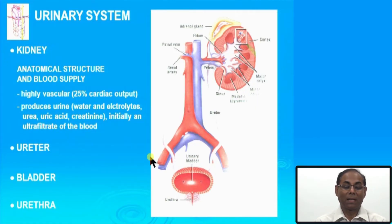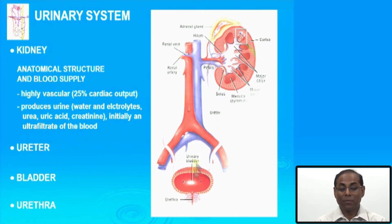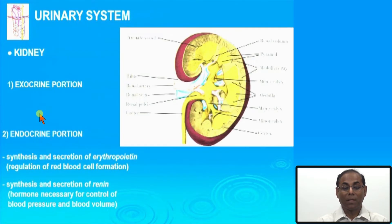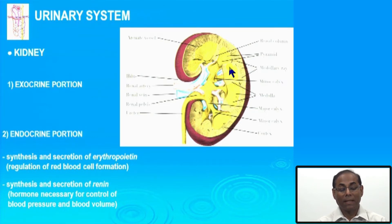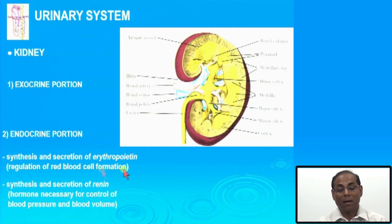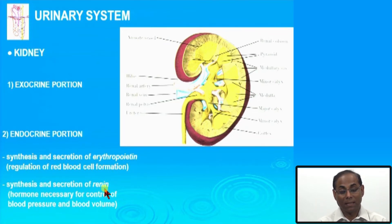The kidney is a very vascular organ because it takes almost one-fourth of total cardiac output for filtration, and it is connected to the urinary bladder by the ureter and urethra. The kidney has an exocrine portion related to excretory function and also an endocrine function. The two most important hormones produced are erythropoietin, important for regulation of red blood cell formation, and renin, which is extremely important for maintaining blood pressure through the renin-angiotensin system and regulating blood volume.